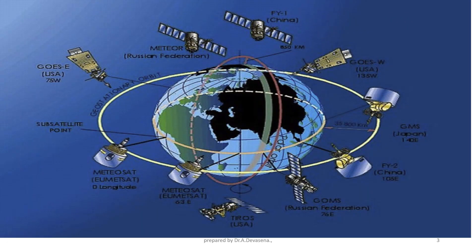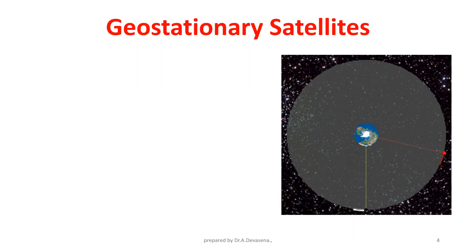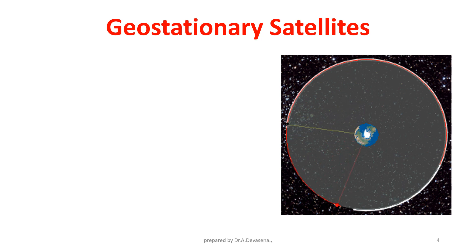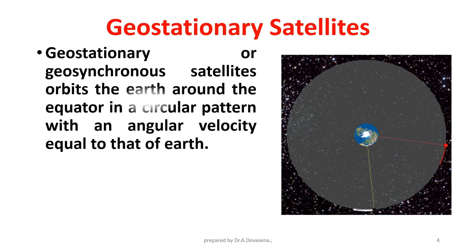Satellites in geostationary orbit is represented here. Geostationary satellites. Geostationary or geosynchronous satellites orbit the Earth around the equator in a circular pattern with an angular velocity equal to that of Earth.